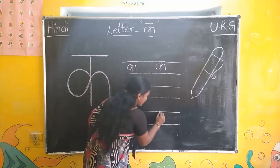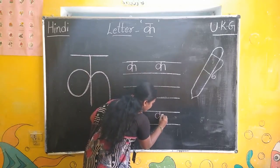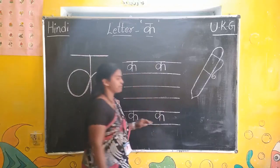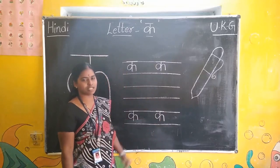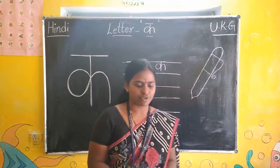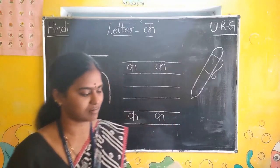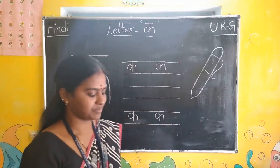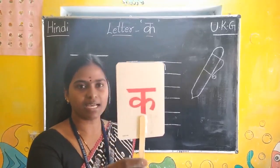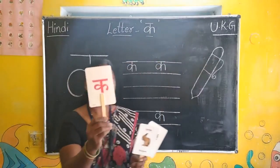Ka se. Column. Say and write. Ka se color. Practice well children. Now we will read picture reading also. Look here. Ka. Ka se color.